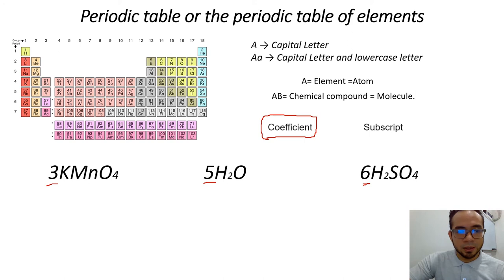And, coefficient indicates how many molecules we have. For example, this exercise, we have three molecules. Next one, we have five molecules. The last one, we have six molecules.